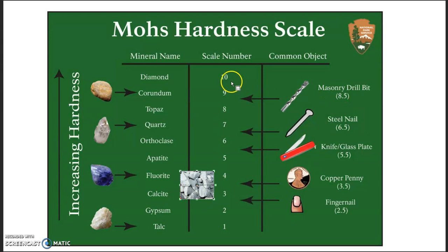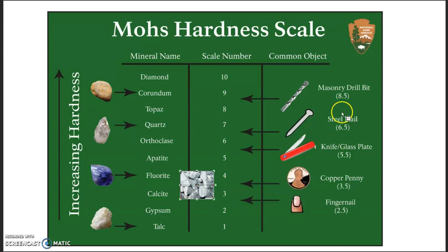Diamond sits at the top of Mohs hardness scale, meaning diamonds will scratch other materials. If you really believe this, put your money where your mouth is: take a diamond, put it on an anvil, and hit it with a hammer. Will the anvil and hammer shatter, or will you be left with diamond dust? That's how you know this is pure bunkum. When presented as science, it's actually pseudoscience — it's not true.